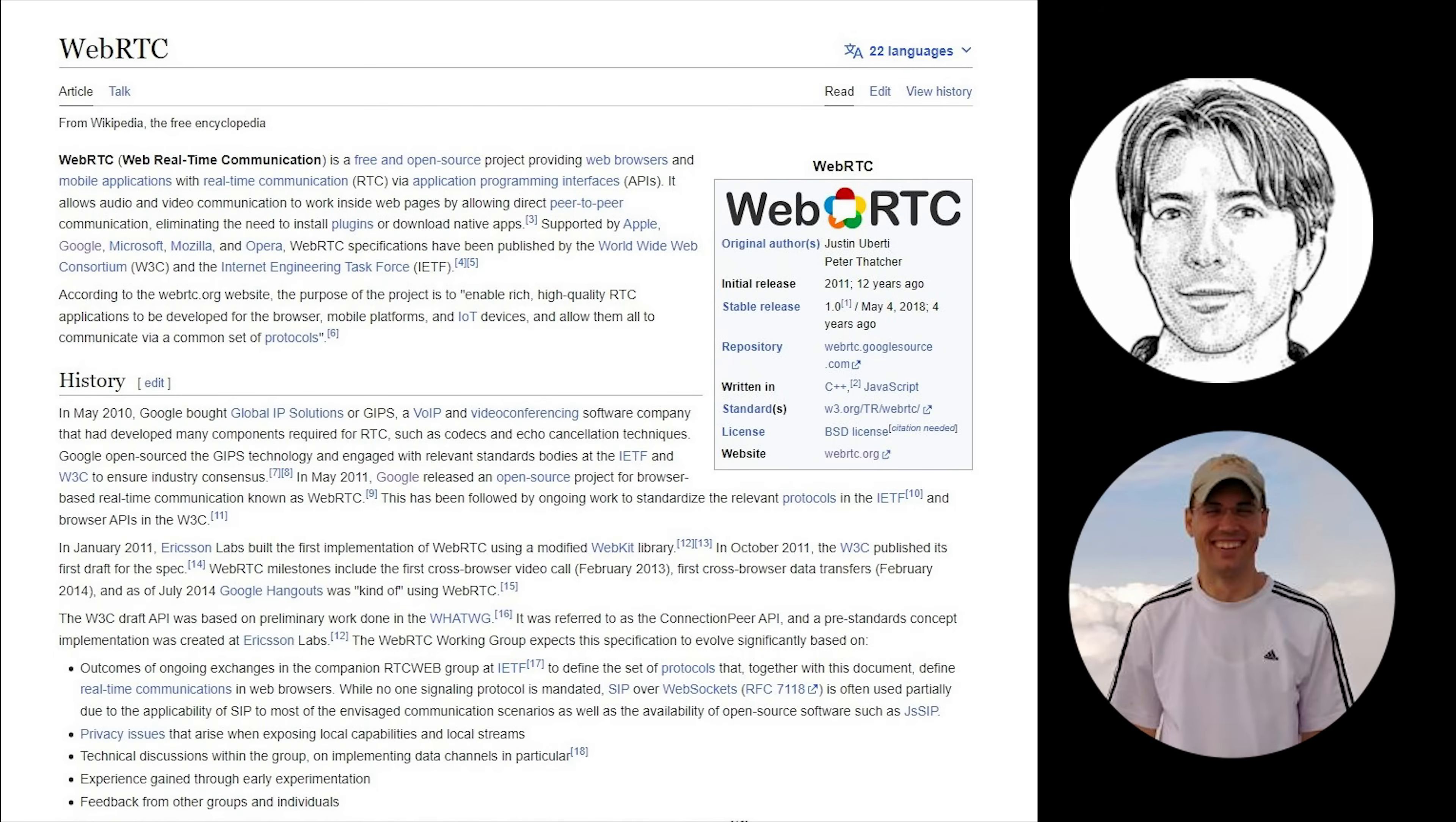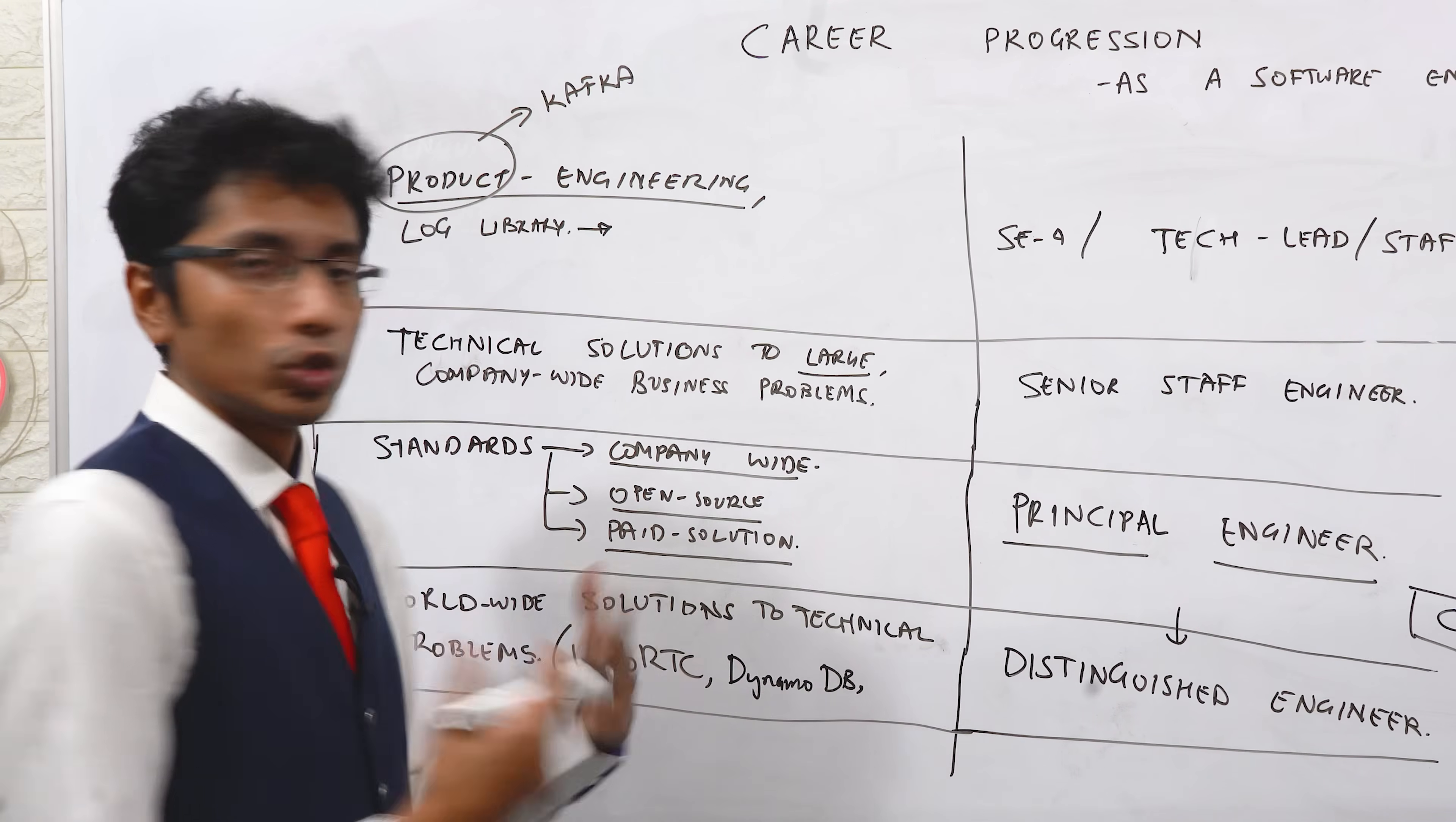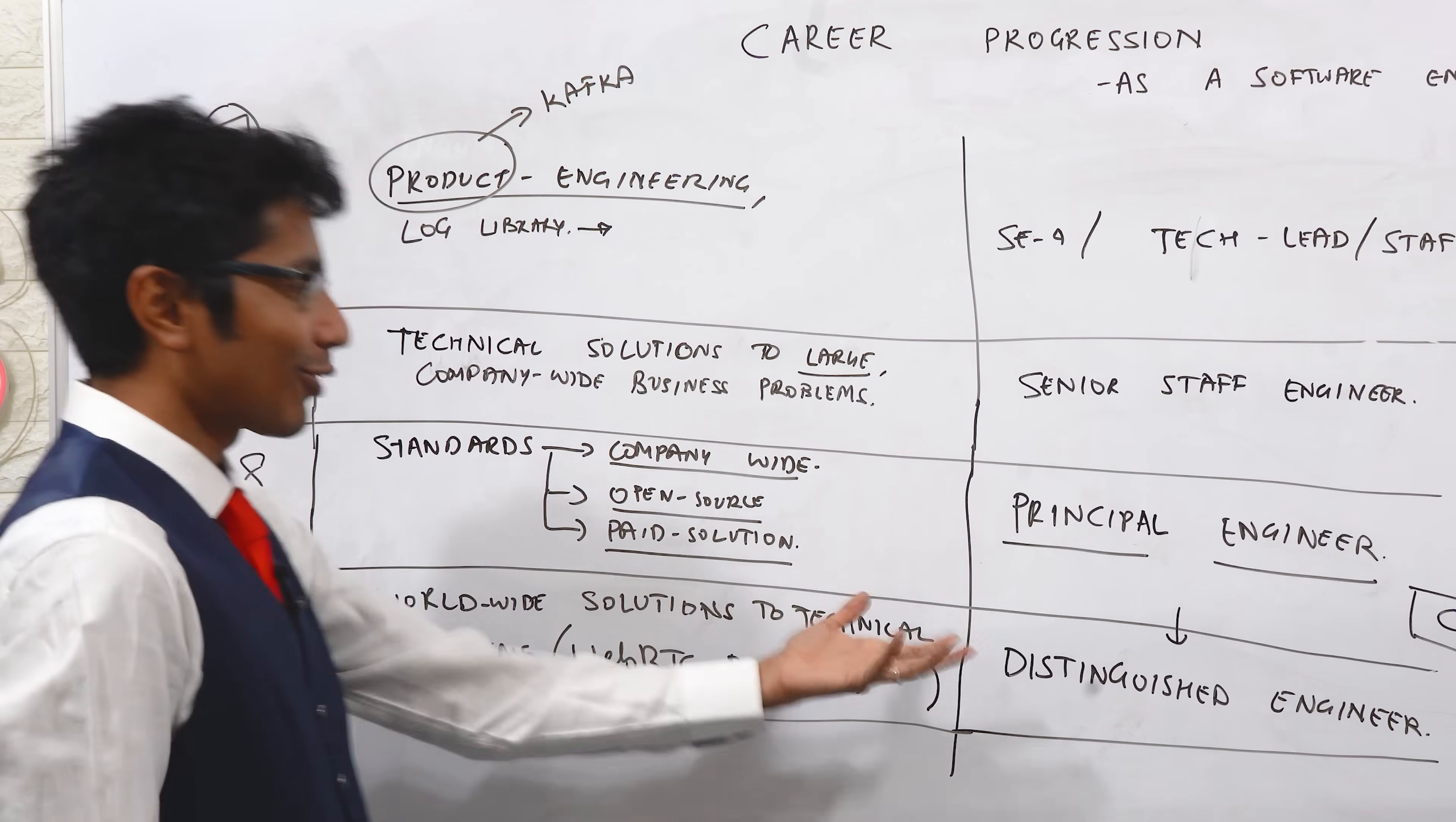You can look at DynamoDB. The solution here, when you open source it or you make it available for a price, becomes huge. What's the difference between a principal engineer and a distinguished engineer? The distinguished engineer usually has a solution which is adopted much more by the industry or the world.